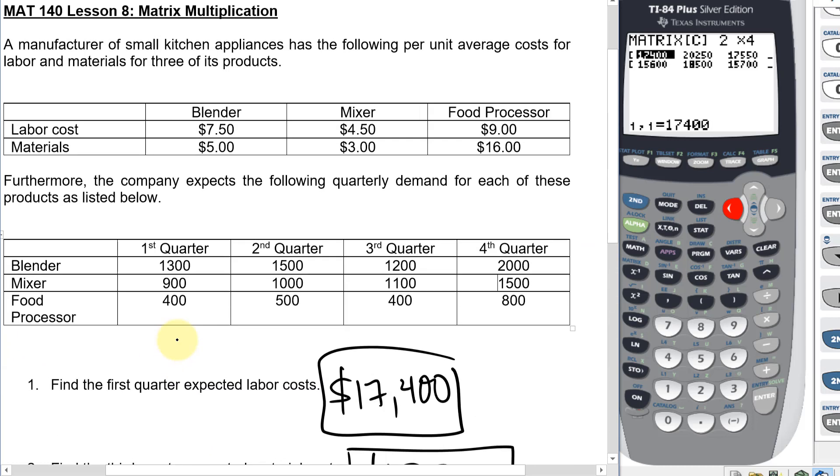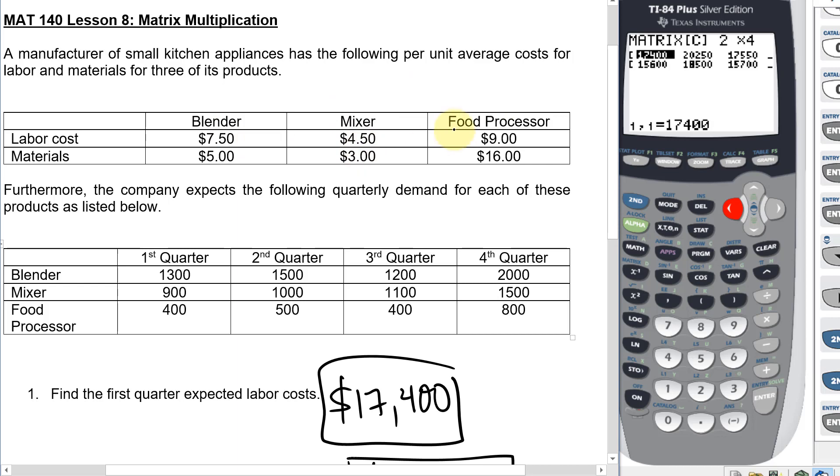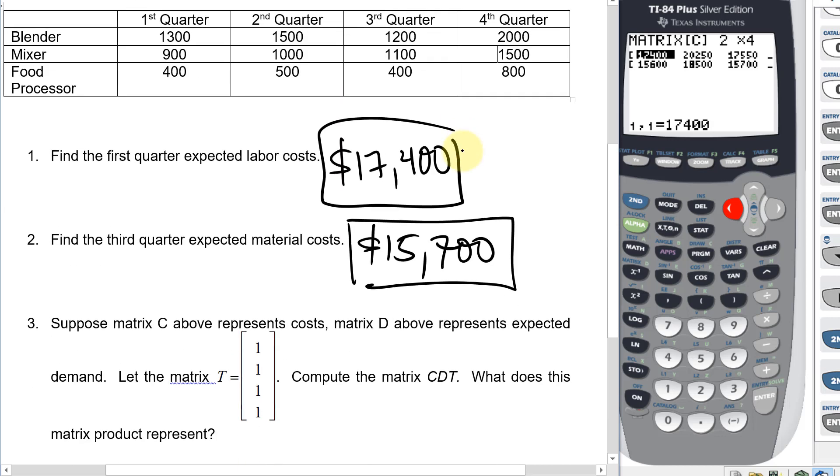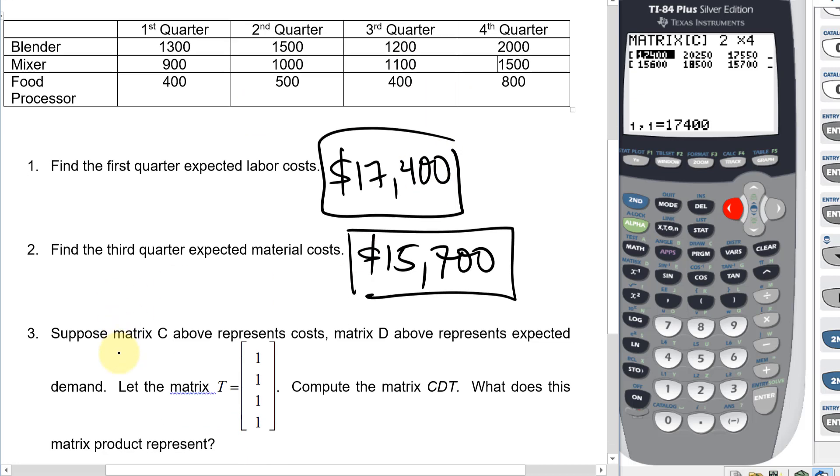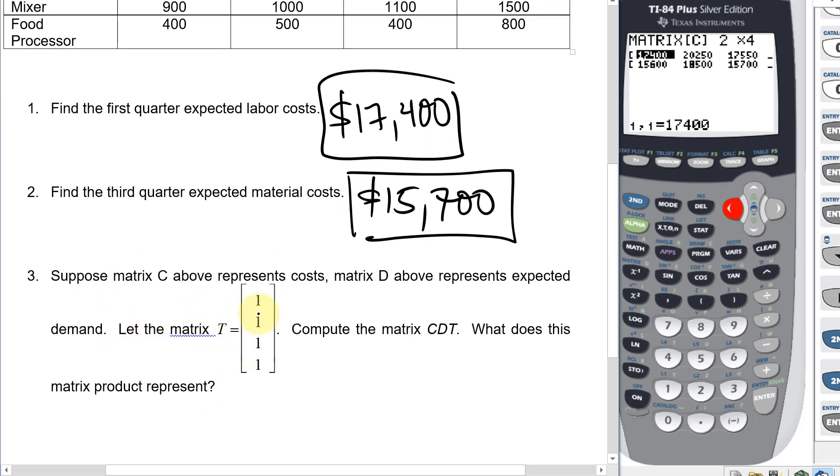Now, suppose that matrix C represented this matrix that we were given for all the costs, and the second matrix, matrix D, represents expected demand. Suppose we multiplied by another matrix T. So we took that product that we just did, multiplied by T, which is this column of ones. What does this represent?